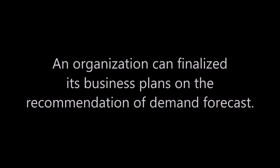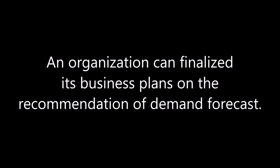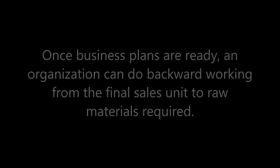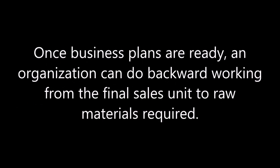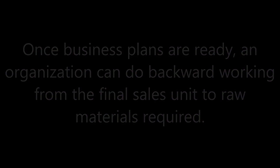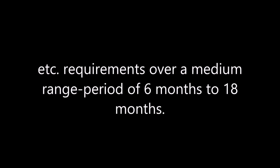An organization can finalize its business plans on the recommendation of demand forecast. Once business plans are ready, an organization can do backward working from the final sales unit to raw materials required. Thus, annual and quarterly plans are broken down into labor, raw material, working capital, etc. requirements over a medium range period of 6 months to 18 months. This process of working out production requirements for a medium range is called Aggregate Planning.